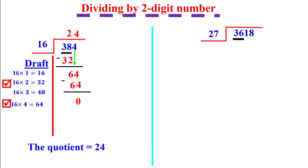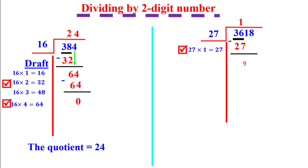By the same way, we take the first two digits: 36 divided by 27. That's 1. 1 times 27 equals 27. Write a line and subtract — the difference is 9. Bring down the next digit, which is 1. Now try: 2 times 27 equals 54, and 3 times 27 equals 81 — it's close to 91.